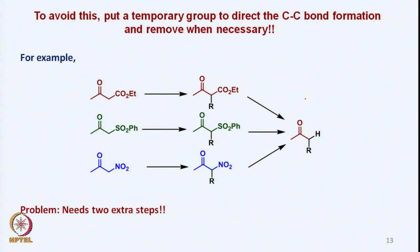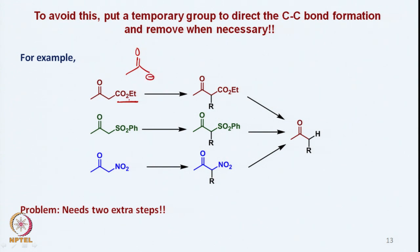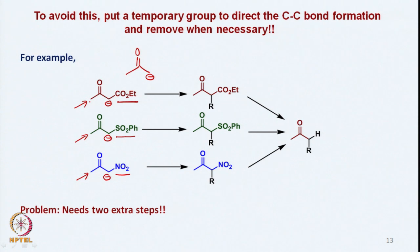To obtain C-Si bond formation instead, we can temporarily introduce a group such as an ester, sulfonyl, or nitro group. These groups increase the acidity of the alpha hydrogens on that carbon. The proton on the carbon adjacent to the ester, sulfonyl, or nitro group is more acidic, so deprotonation occurs there, and C-Si bond formation readily occurs on that carbon. Since the anion is stabilized, it is a soft nucleophile, and with a soft electrophile the C-Si bond formation is favored.